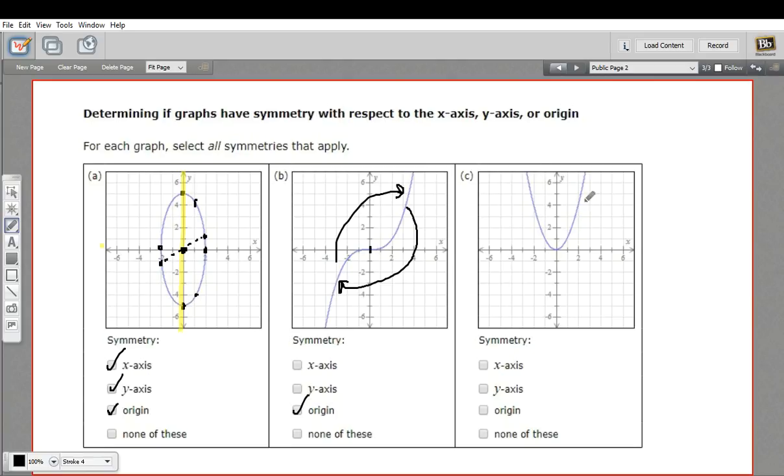In our last one, we've got your typical parabola. And I'm sure you can see right off that it doesn't have x-axis symmetry. There's nothing down here and there's all this stuff up here. So they're definitely not the same.